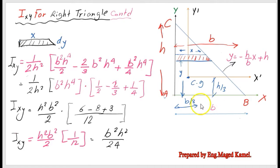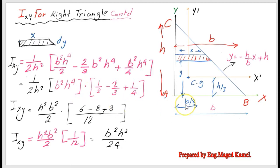The result Ixy = b²h²/24 has a positive value, provided that x and y are not principal axes. By definition, the principal axes are those for which Ixy = 0. Our next step is to provide an expression for Ixy at the centroid.